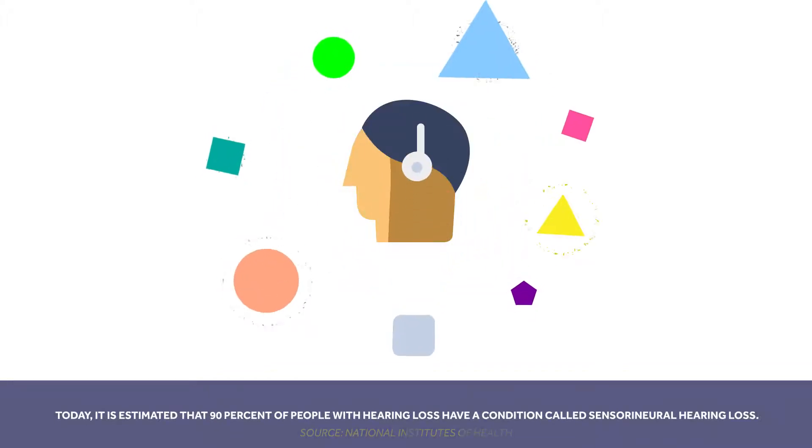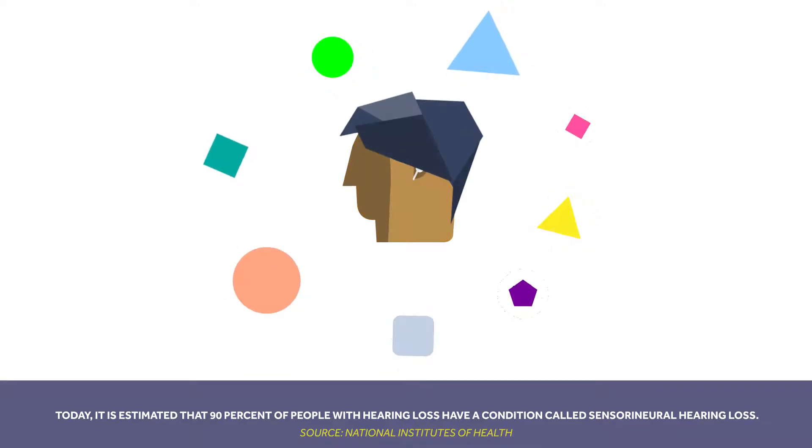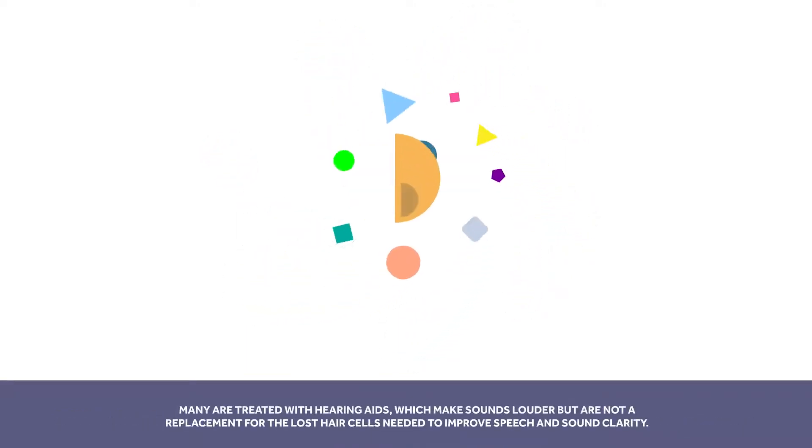Today, it's estimated that 90% of people with hearing loss have a condition called sensorineural hearing loss. Many are treated with hearing aids, which make sounds louder but are not a replacement for the lost hair cells needed to improve speech and sound clarity.